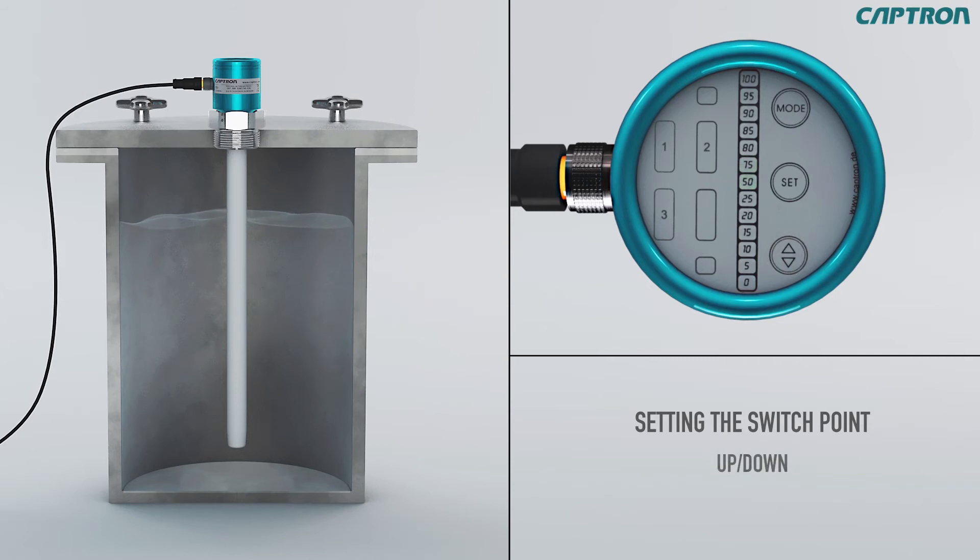When the switch output function is set on NO, the output is on high as soon as the switch point is exceeded. With the option NC, the output is on low when the switch point is exceeded. Confirm your new setting with set.